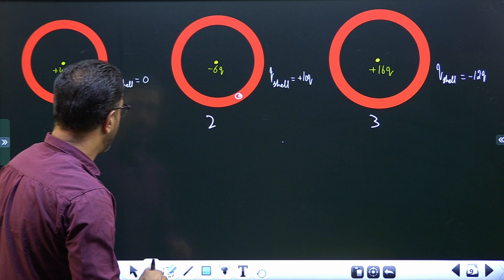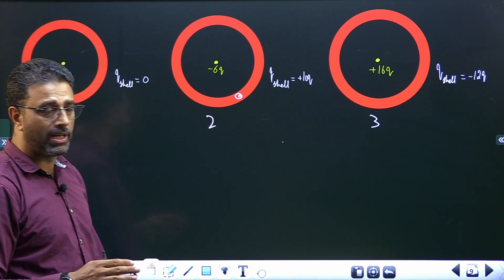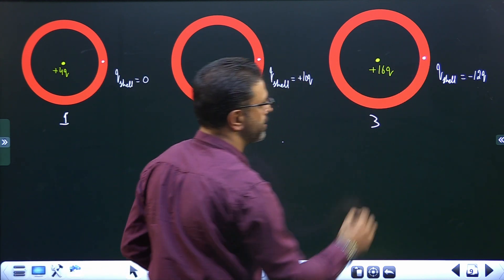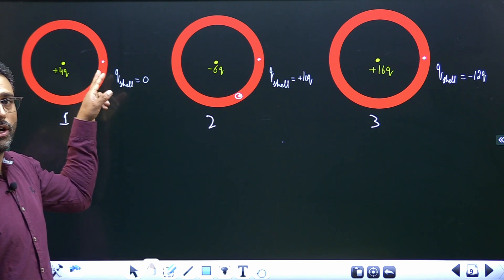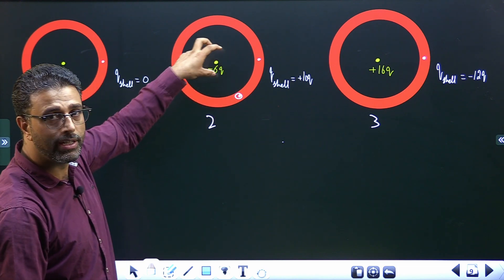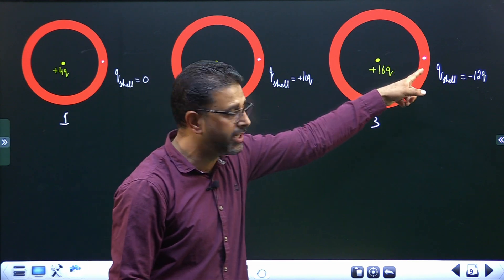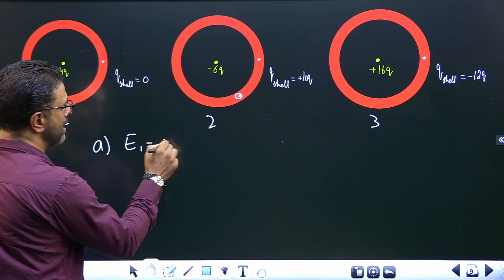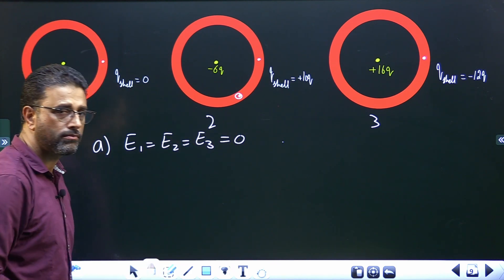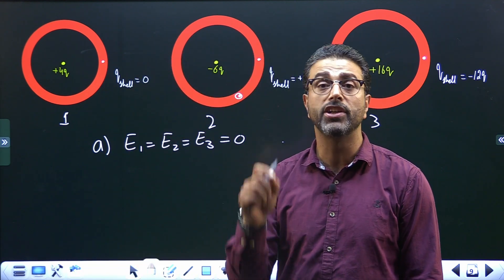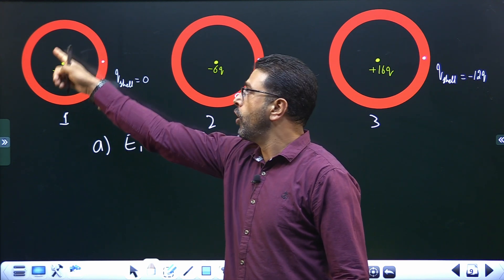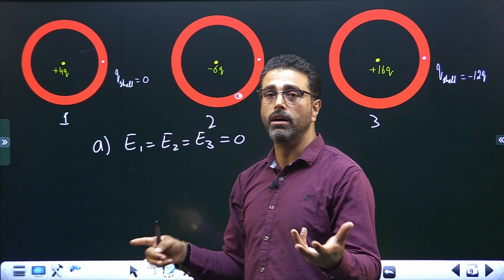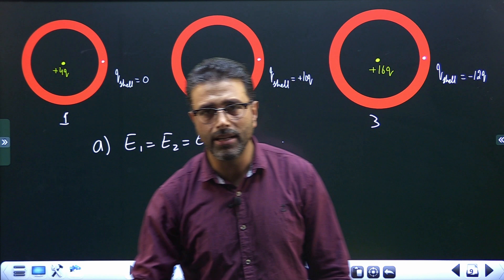Now let's move on to the question. We are asked to rank the three situations according to the electric field strength — magnitude of the electric field — halfway through the shell. Halfway through the shell means this point is lying inside the metallic shell, inside the material of the metal, not inside the hollow part of the shell. Inside the material of a metal, field is zero. So E1 = E2 = E3 = 0, because in all three cases the point is lying in the material of the metal. Had it been inside the hollow space of the shell, the situation would be different — but the field inside the material of a metal is always zero. So part A: all of them tie with field equal to zero.